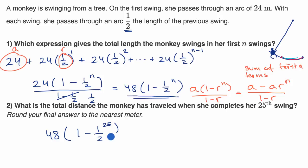Now this is going to be a very, very small number, so it's actually going to be pretty close to 48 meters, but let's see what this is equal to, and we're going to round to the nearest meter.